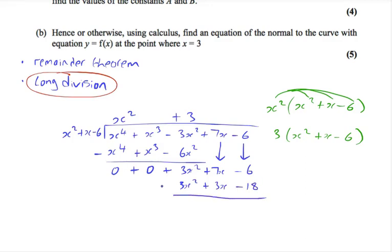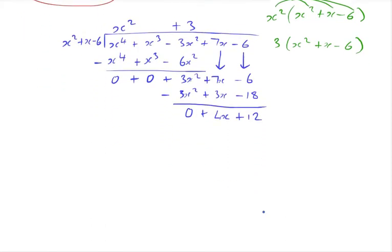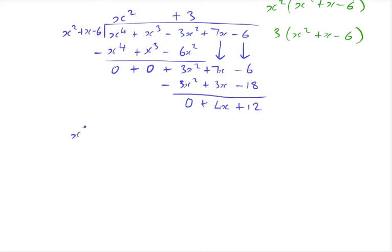We subtract. 3x squared take away 3x squared is 0. 7x take away 3x is 4x. Minus 6 take away minus 18 becomes minus 6 plus 18, which gives us plus 12. So our answer is x squared plus 3 plus the remainder, 4x plus 12 over what you were dividing by, x squared plus x minus 6.